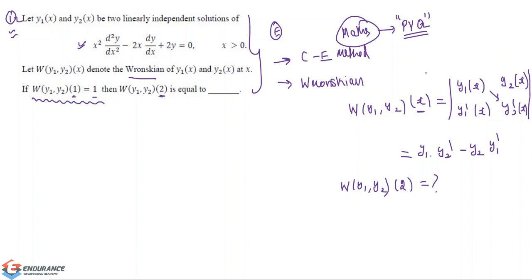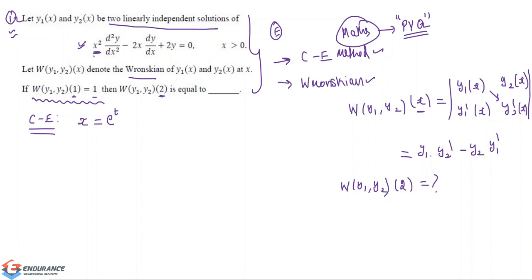We can solve this using the Cauchy-Euler method to find the two linearly independent solutions. From Cauchy-Euler's formula, we substitute x equal to e to the power t, so t equals ln of x. We use this when the coefficients of the differential terms are not constant — here the coefficient is x squared, which is a variable, so we use Cauchy-Euler's formula.